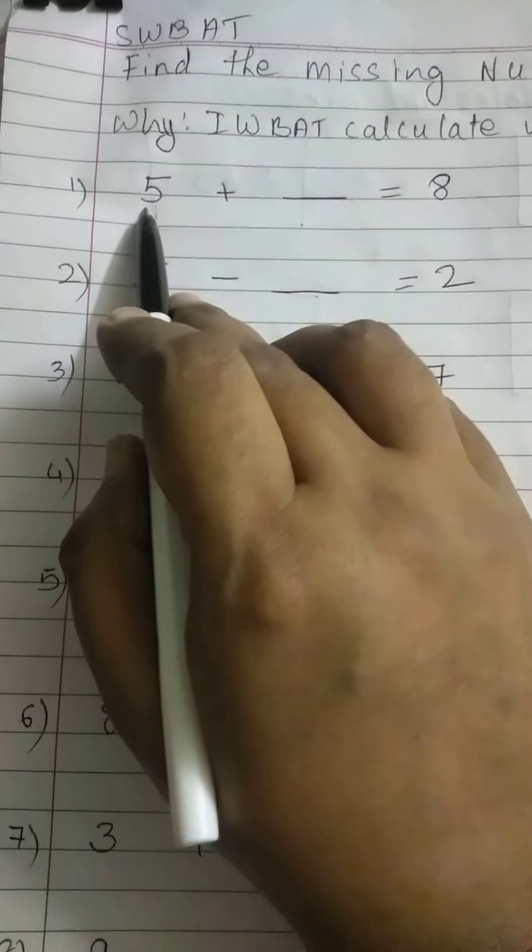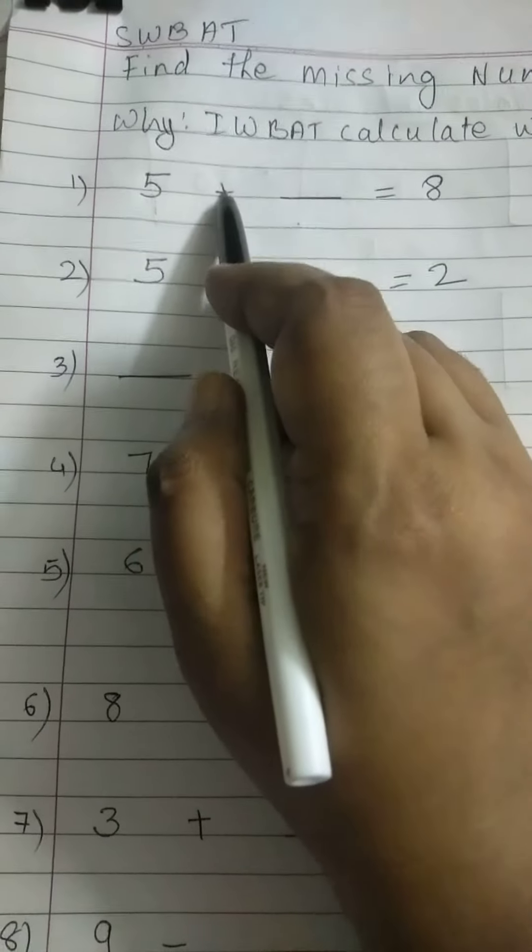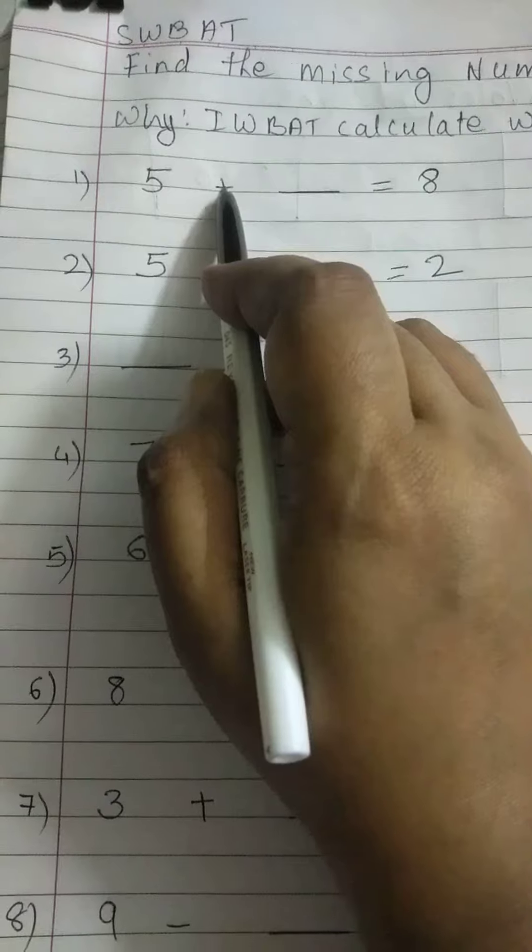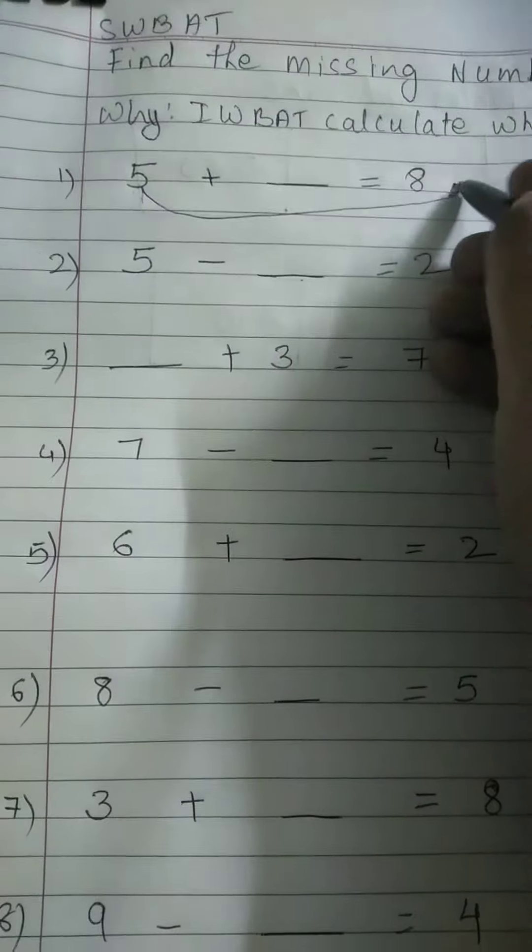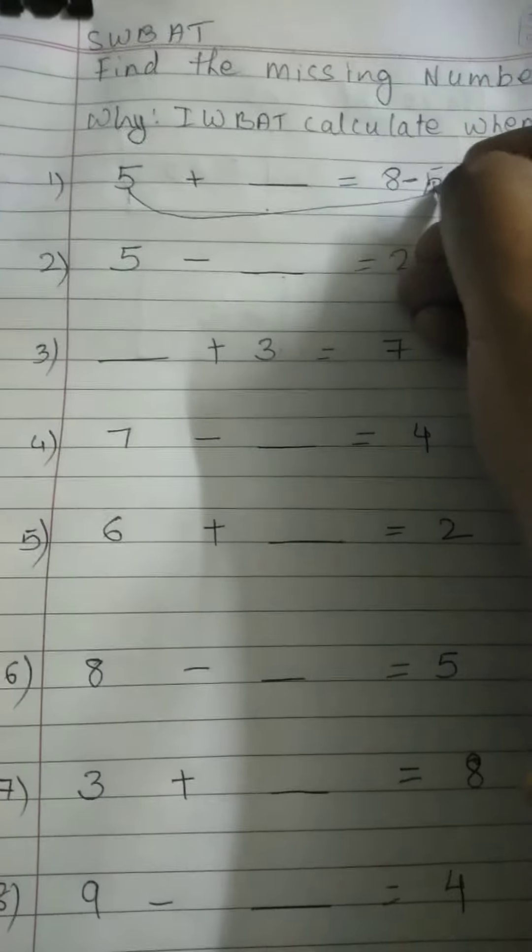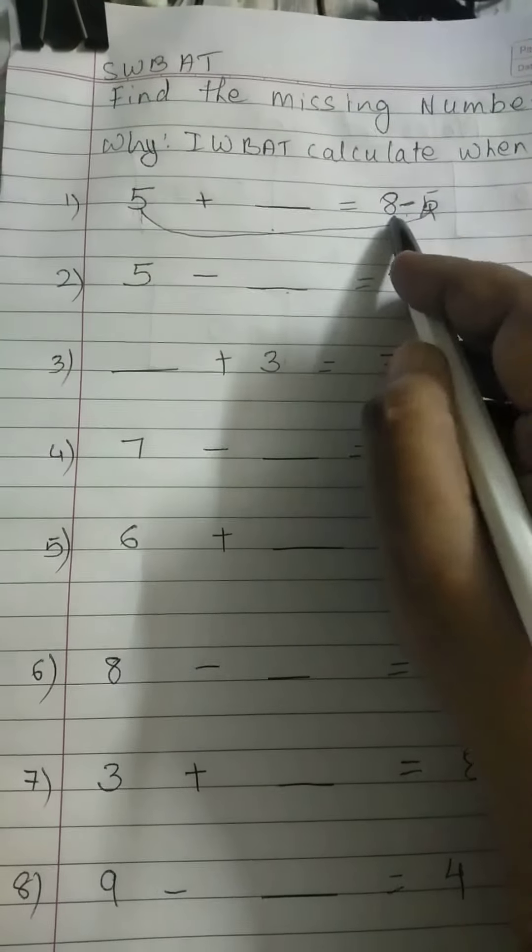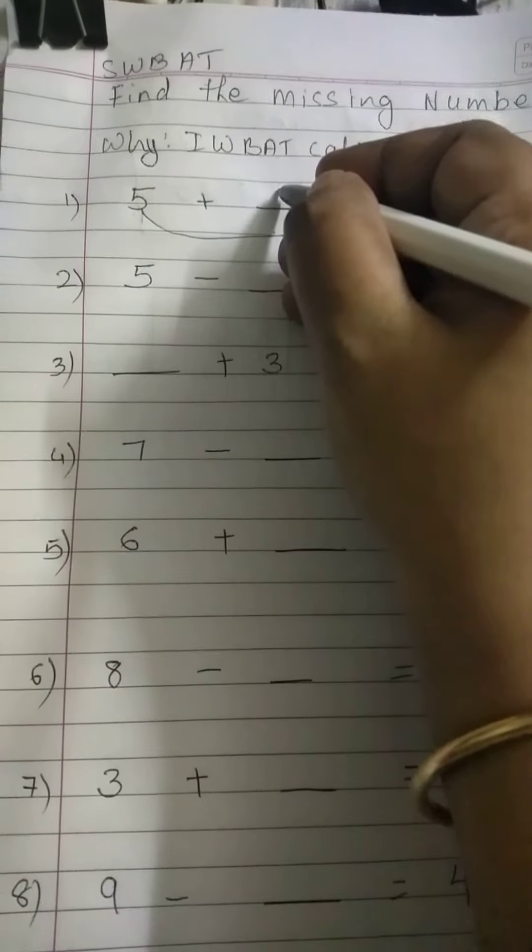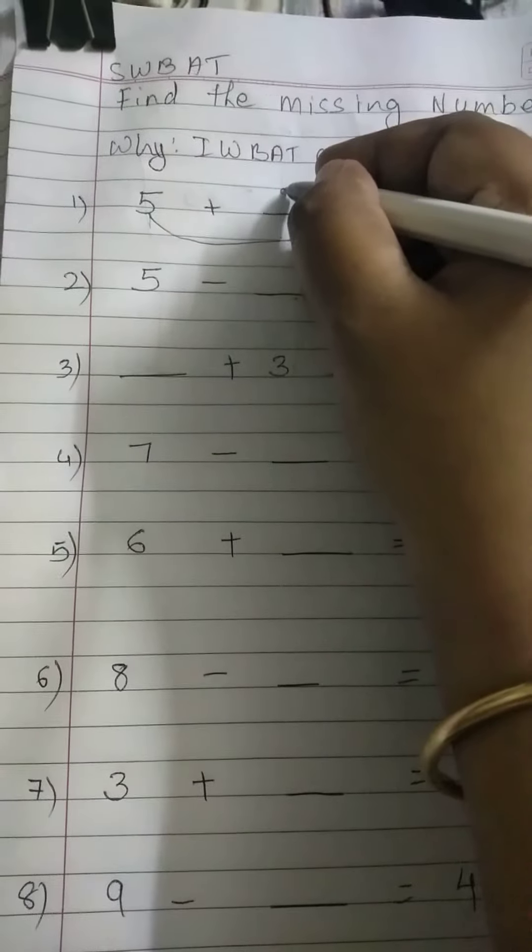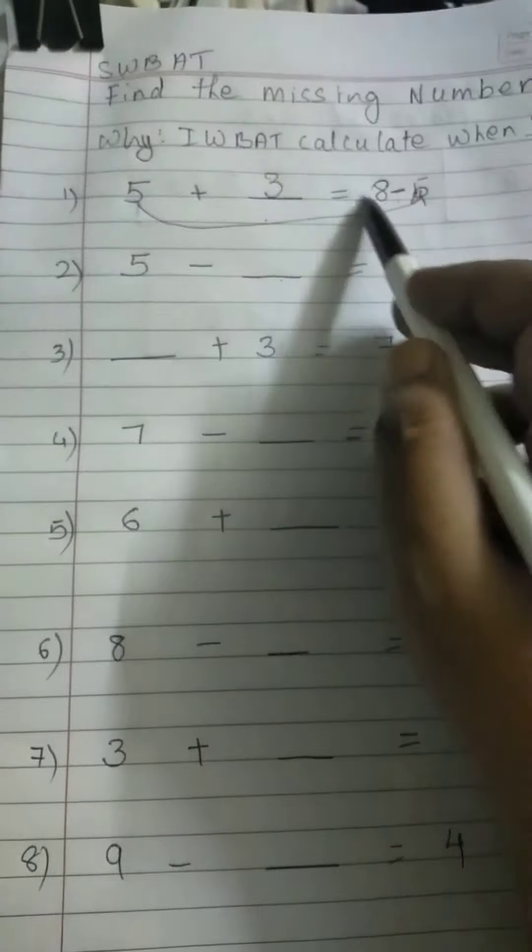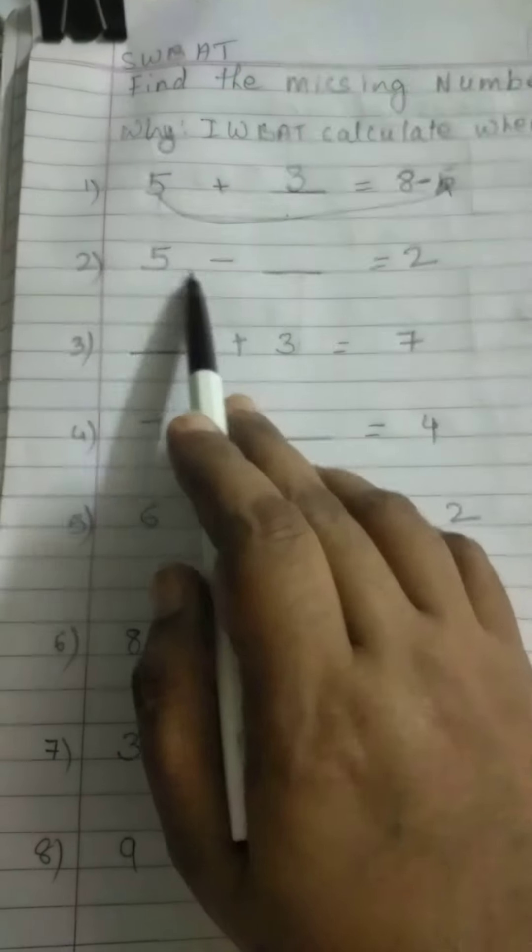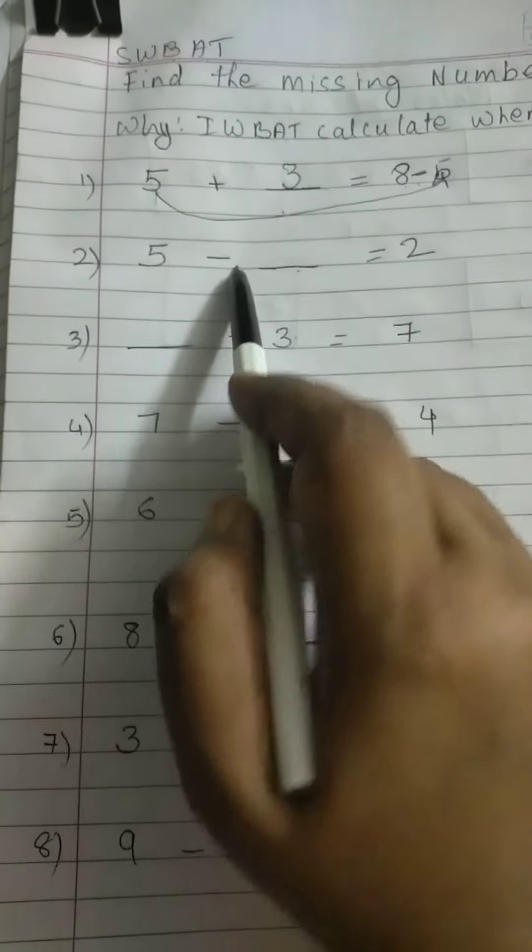Now 5 okay the sign is plus when the sign is plus what do we do 5 will go this side right and it becomes minus 5 so 8 minus 5 is kya hata 8 minus 5 3 right so 5 plus 3 will give me this answer 8